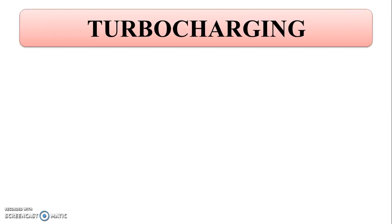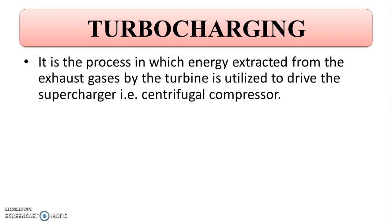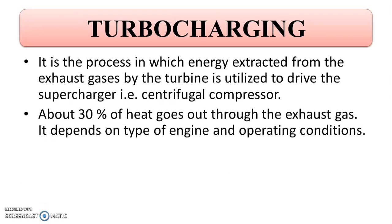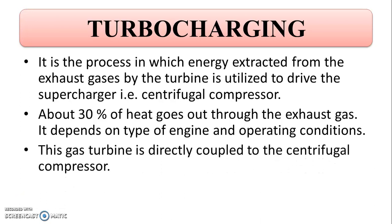The second method is turbocharging. In this method, the energy extracted from the exhaust gases by the turbine is utilized to drive the supercharger, that is, the centrifugal compressor. We know about 30% of heat goes out through the exhaust gas as waste. This also depends upon the type of engine and operating conditions. This waste heat is utilized to run the turbine, and that turbine output is used to run the compressor. This gas turbine is directly coupled to the centrifugal compressor.